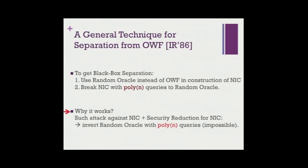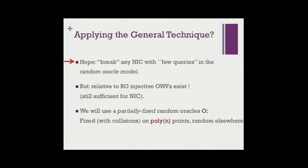Why does this work? If you break the scheme in the random oracle model, the security of your scheme would translate your attack into an attack against a random oracle — telling you how to invert a random oracle with only polynomially many queries — which is impossible since a random oracle is information-theoretically one-way. However, we cannot directly apply this framework in our setting. The reason is that relative to a random oracle, a one-to-one one-way function exists, and if you have a one-to-one one-way function you can still get non-interactive commitments. So we must modify this framework.